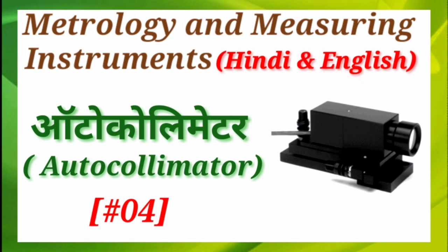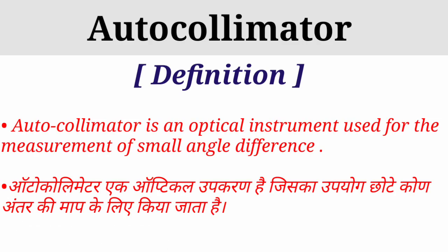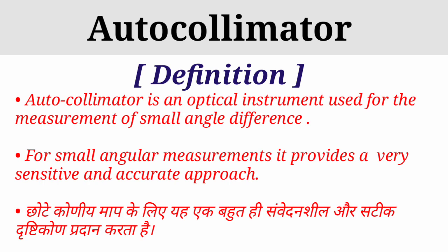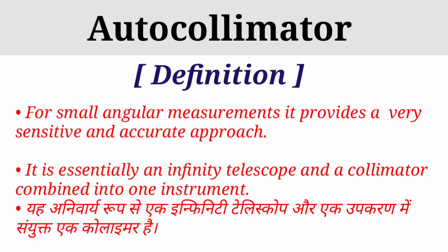So let's start. First of all, the definition: an autocollimator is an optical instrument used for measurement of small angle differences. It means an autocollimator is an optical tool for small angle measurement. It provides a very sensitive and accurate approach. It is essentially an infinity telescope and a collimator combined into one instrument.